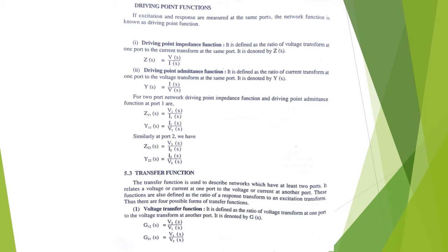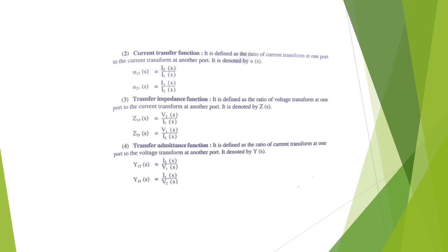We also have the current transfer function. For example, α12(s) is given as I2(s) divided by I1(s), defined as the ratio of current transform at the output port to the current transform at the input port. For the transfer impedance function, Z21(s) is the ratio of voltage transform at the input port to the current transform at the output port. Lastly, the transfer admittance function Y21(s) is I1(s) divided by V2(s), the ratio of current transform at the input port to the voltage transform at the output port.